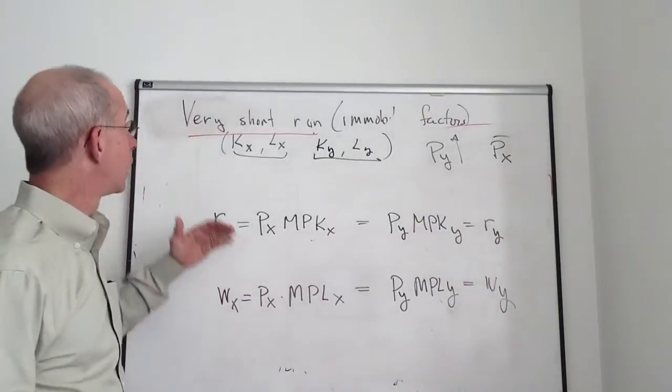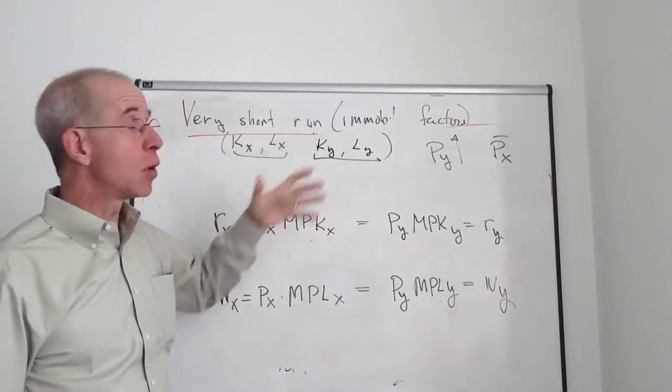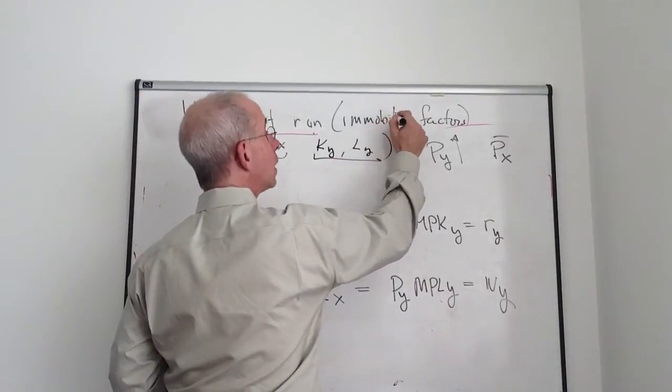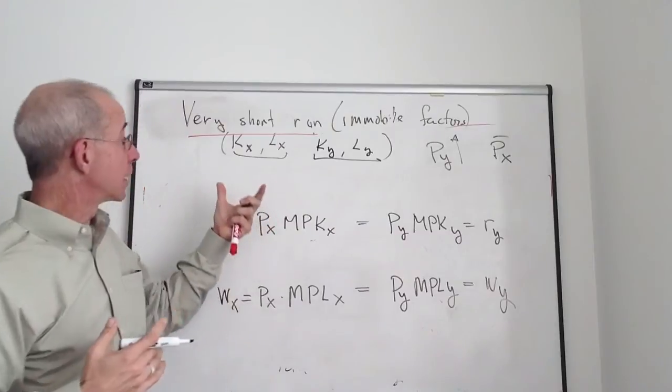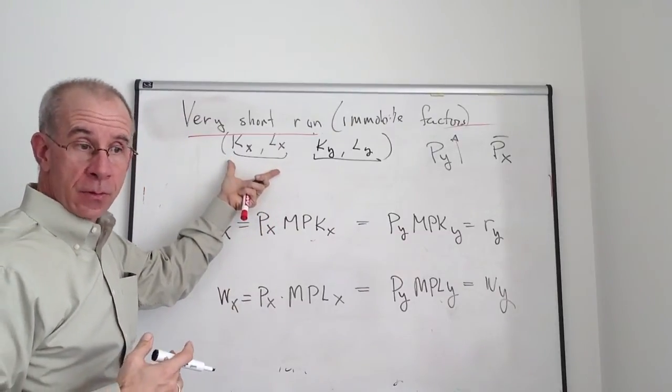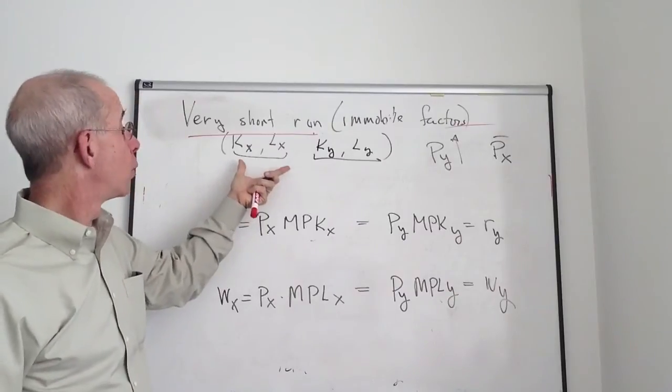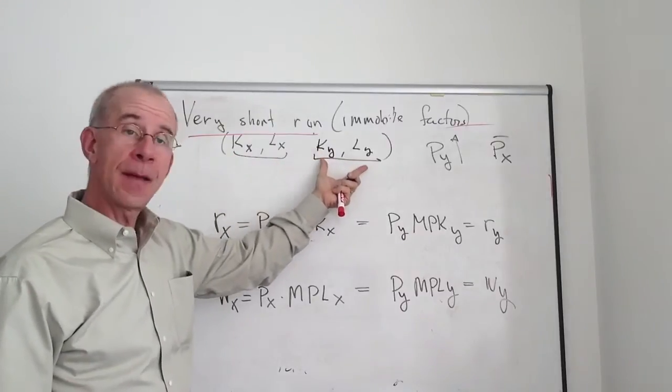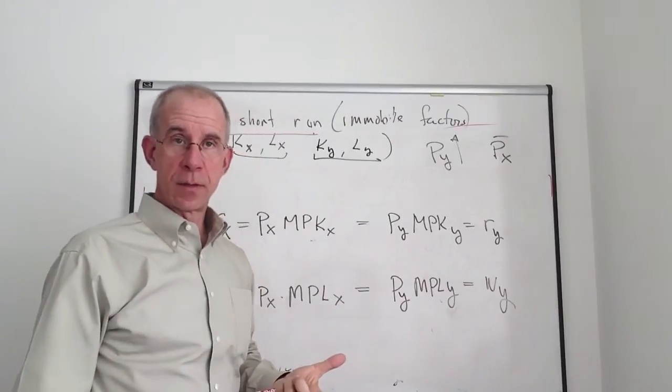I want to do an analysis of the very short run, the immobile factors model. That's another way of saying we're going to be looking at the impact on capital and labor, real income, standard of living, real returns, when labor and capital cannot move from X and capital cannot move from Y. They're stuck in the industry where they're employed.